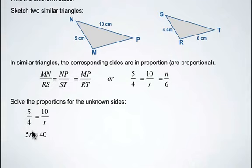Multiplying 5 times r gives us 5r, and 4 times 10 gives us 40. We need to divide both sides by 5, giving us 40 divided by 5, or 8 centimeters.